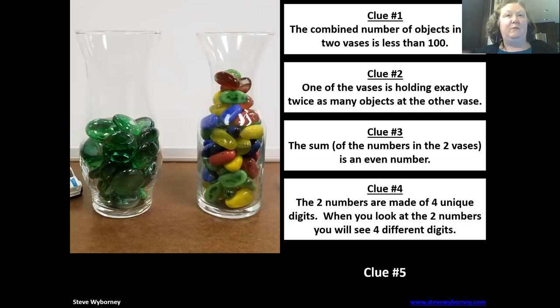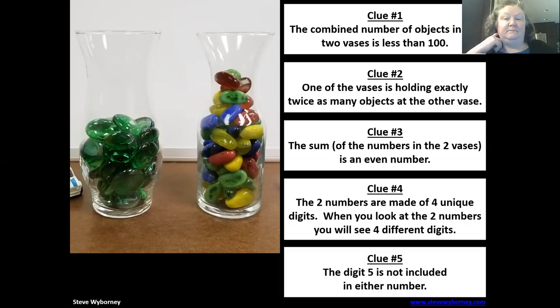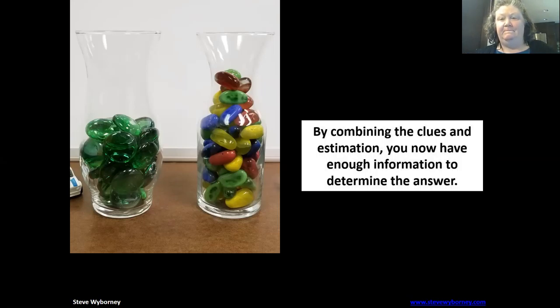It could be 21 and 42. Nope, it can't because I would use two twice. You have to have all four numbers, each digit is a different number, and the digit five is not included in either number. Okay, so there are the five clues. You should have enough now to determine the answer.